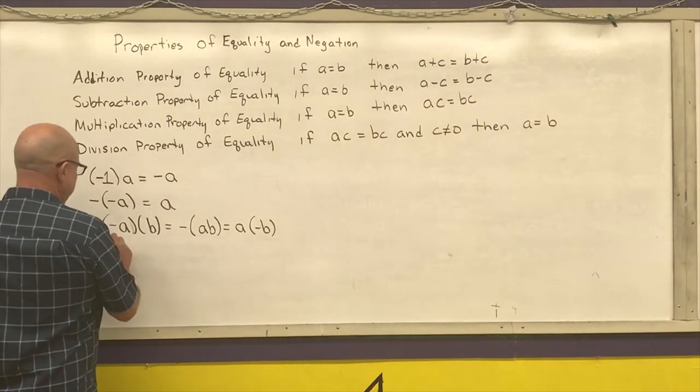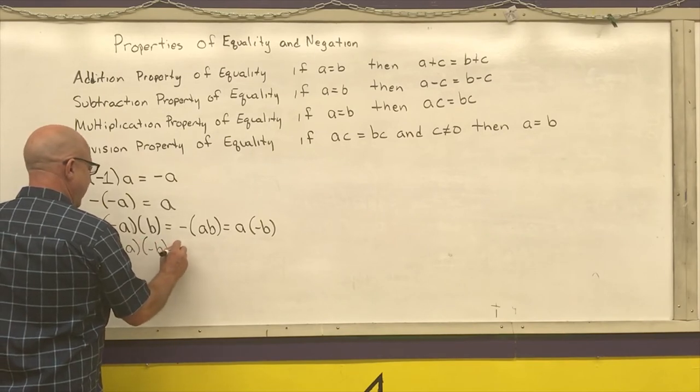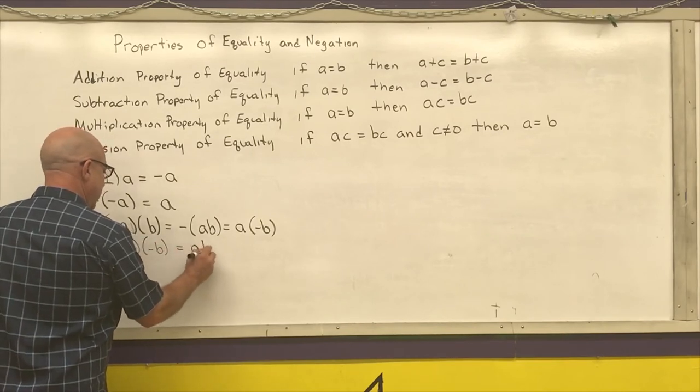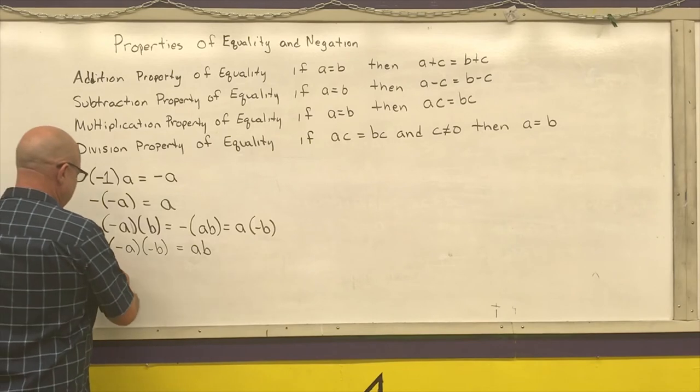Two negative numbers multiply together to give me a positive number.